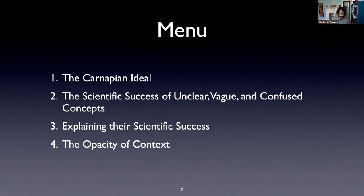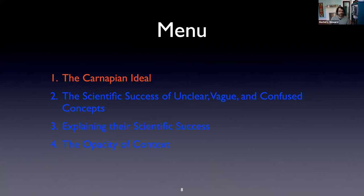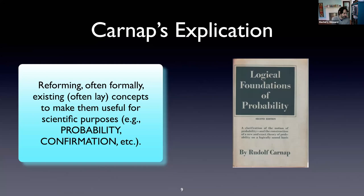Let's start with the Carnapian ideal. As I always do when I talk about conceptual engineering, let me start with Carnap's notion of explication. The notion was most fully developed in the first chapter of the Logical Foundations of Probability in 1950. The idea is that explicating a concept consists in reforming an existing concept — often folk concepts, as Carnap is clear about — to make them useful for scientific purposes.